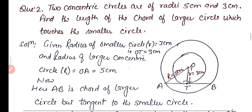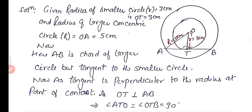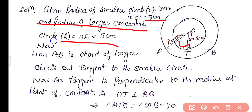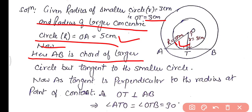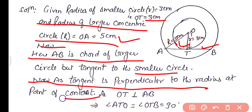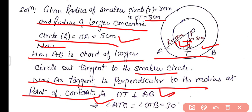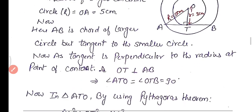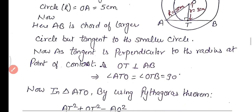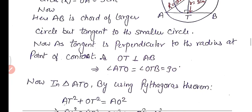In the solution: the radius of the smaller circle OT = r = 3 cm, and the radius of the larger circle OA = R = 5 cm. AB is the chord of the larger circle and a tangent to the smaller circle. Since the tangent is perpendicular to the radius at the point of contact, OT is perpendicular to AB, so angle OTA = 90°.